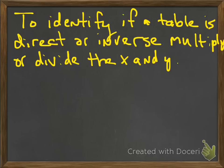Okay, to identify if a table is a direct or inverse variation, multiply or divide the x and y's. So specifically, you have to make sure you understand here. Since y is equal to k times x in a direct variation, if you divide and they always give you the same answer, the x's and y's, then that's a direct variation. If you multiply and they always give you the same answers, that's an inverse variation.